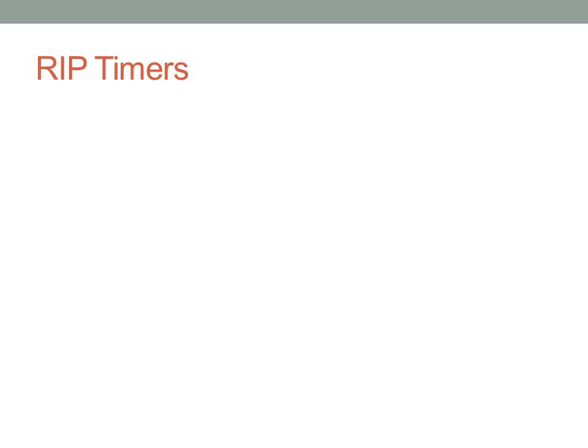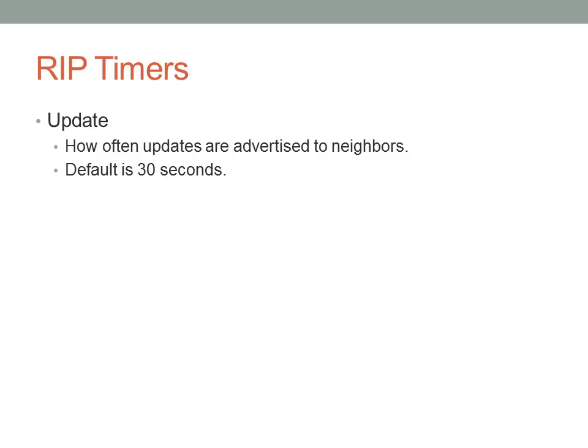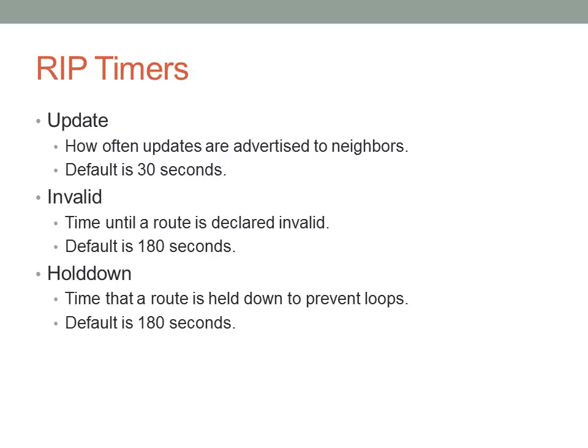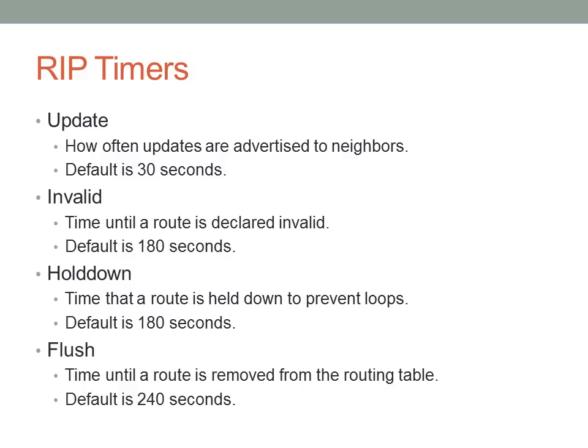Here are the timers associated with RIP. The update timer controls how often updates are advertised to neighbors — the default is 30 seconds. The invalid timer is the time until a route is declared invalid; if no updates are received for a route, it's declared invalid after 180 seconds. The hold down timer prevents loops with a default of 180 seconds. Once the hold down timer expires, the route is flushed — that total time is 240 seconds — just to ensure no routing loops occur.